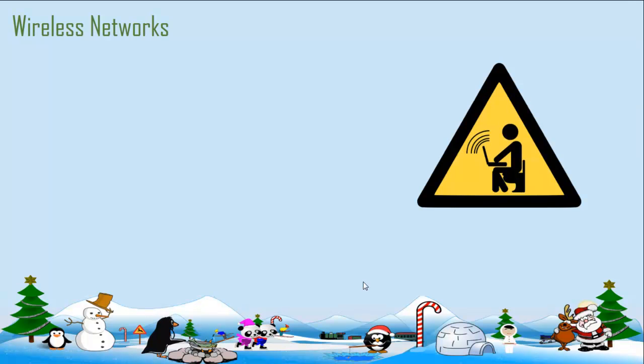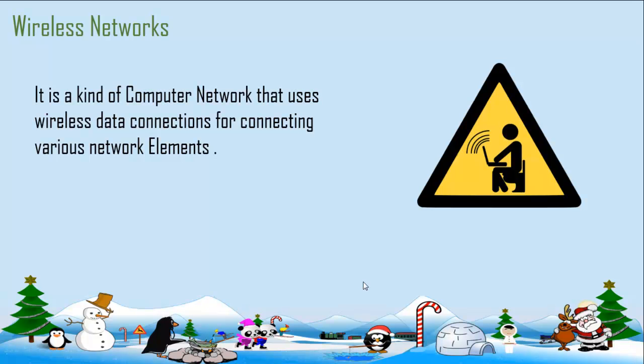Wireless networks, as the name itself suggests, have something wireless in them. We are usually familiar with computer networks that are wired — we see coaxial cables, fiber optics, UDPs — and in wireless networks we have wireless elements or wireless data connections.